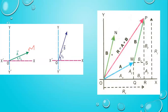By the head-to-tail rule: the tail of the second vector is placed at the head of the first. The head of the resultant gives the answer — this resultant is the vector we need to find by adding the two vectors.